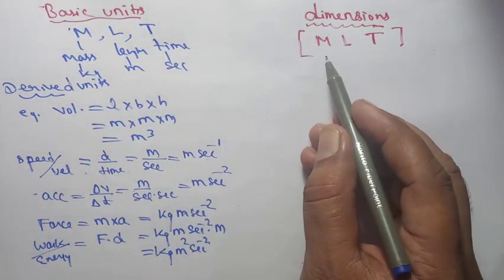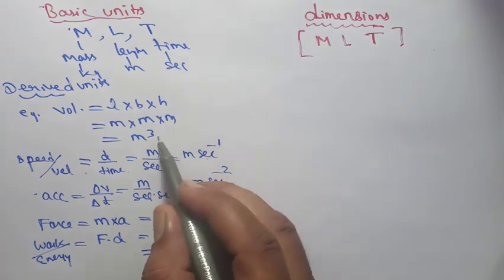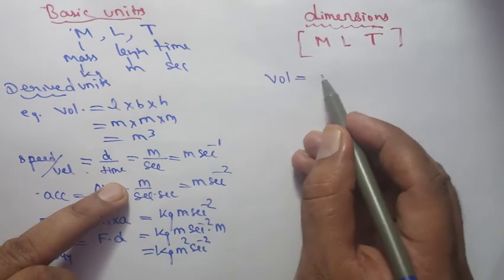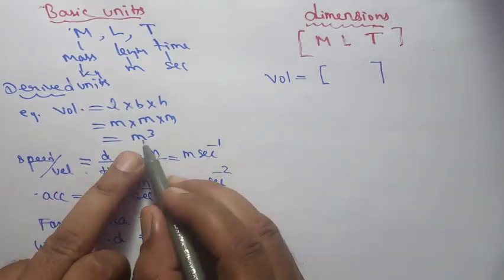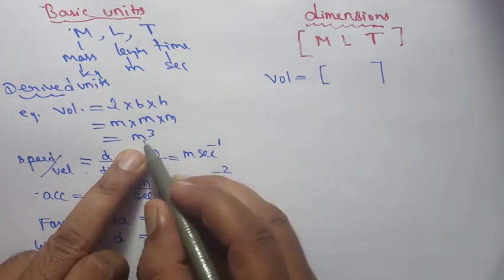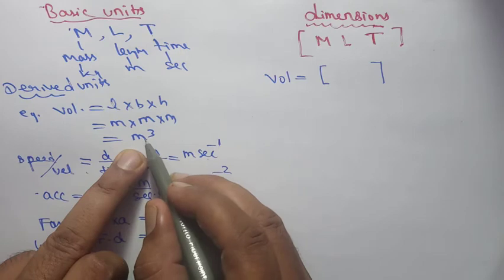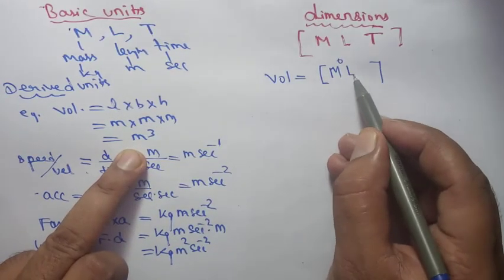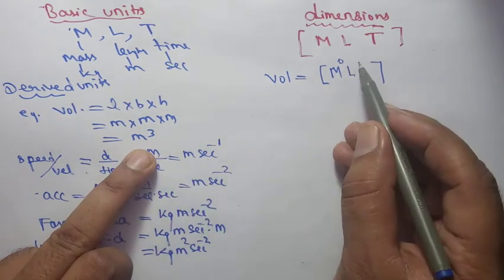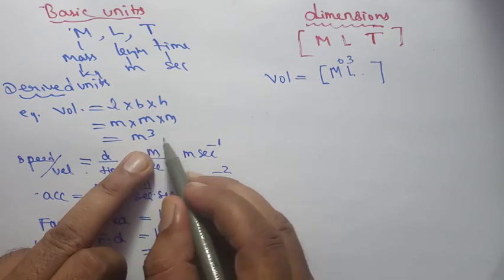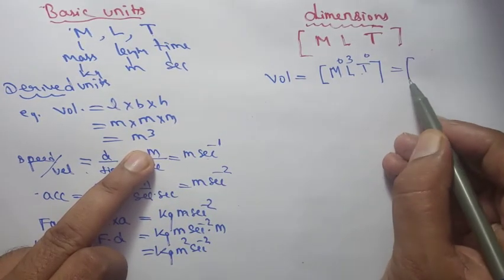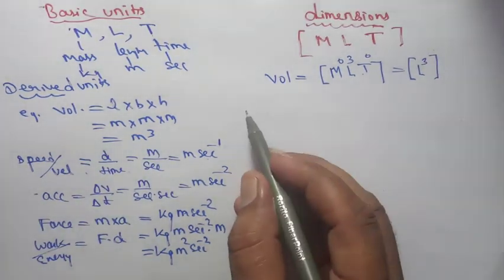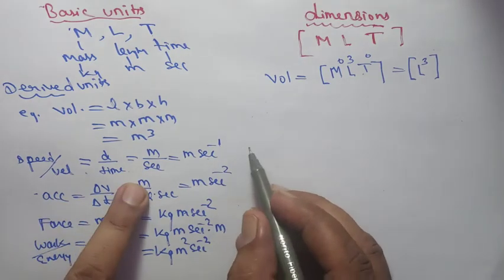Suppose you are asked to write the dimension of volume. Volume is in m³. Meter means length, so mass = M⁰, length = L³ (since three meters), and time is not present so T⁰. So dimension of volume = [L³].